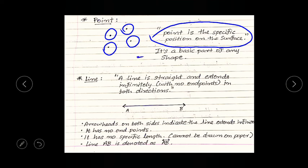A point is a specific position on the surface. As you are seeing this video on a mobile phone, the screen of the mobile phone is nothing but a surface, and the specific position on that surface is known as a point. It is the basic part of any shape or line. If you put dots together, they will create a line.